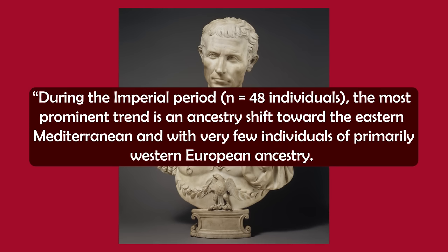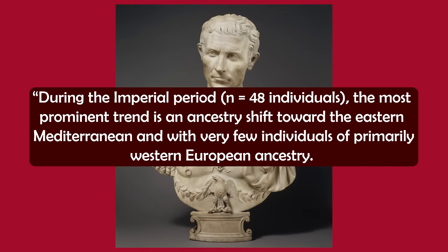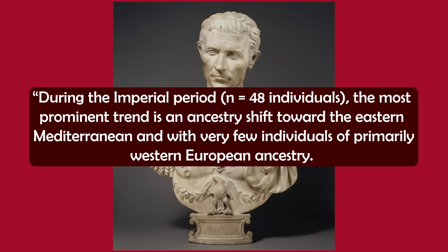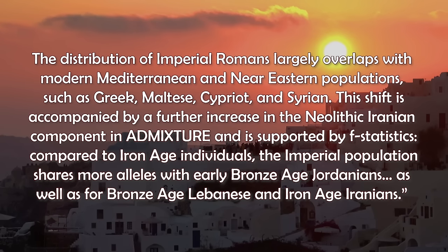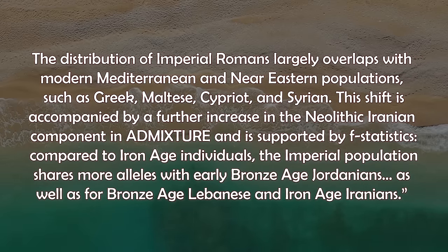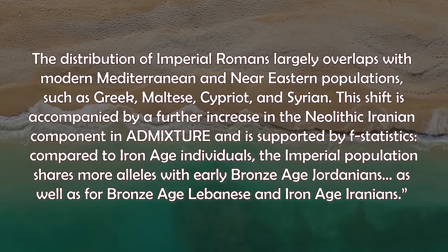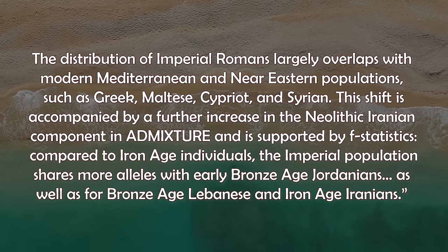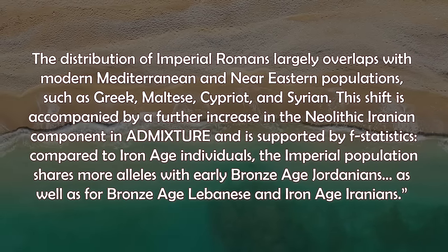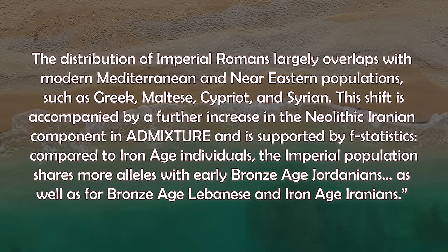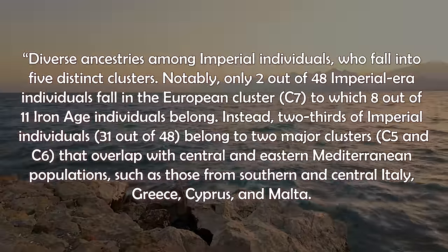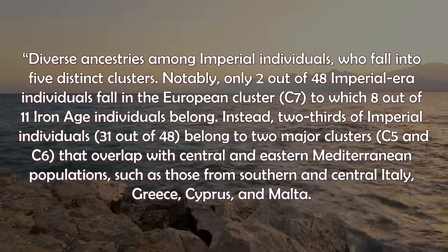As the study found, during the Imperial period the most prominent trend is an ancestral shift towards the Eastern Mediterranean, with very few individuals of primarily Western European ancestry. The distribution of Imperial Romans largely overlaps with modern Mediterranean and Near Eastern populations, such as Greek, Maltese, Cypriot, and Syrian. This shift is accompanied by a further increase in the Neolithic-Iranian component and is supported by F-statistics. Compared to Iron Age individuals, the Imperial population shares more alleles with early Bronze Age Jordanians, as well as Bronze Age Lebanese and Iron Age Iranians.